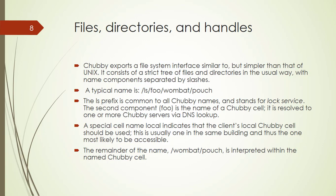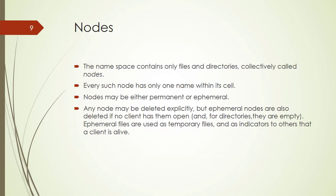The remainder of the name, like 'wombat/pouch', is interpreted within the named Chubby cell. The namespace contains only files and directories, collectively called nodes. Every such node has only one name within its cell. Nodes may be either permanent or ephemeral. Any node may be deleted explicitly, but ephemeral nodes are also deleted if no client has them open, or for directories, if they are empty. Ephemeral files are used as temporary files and as indicators to others that a client is alive.